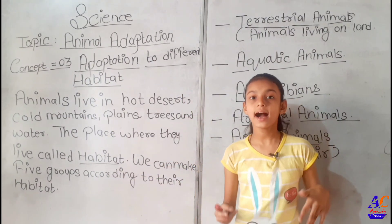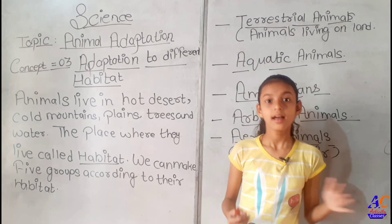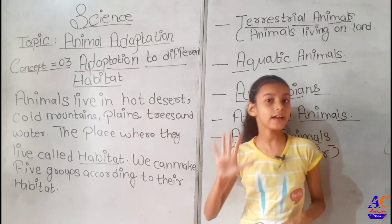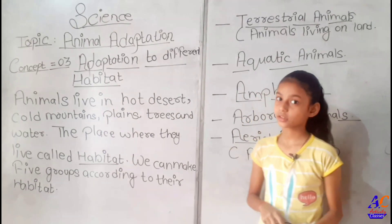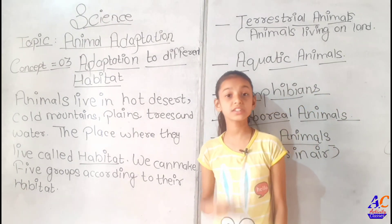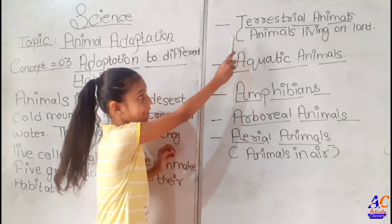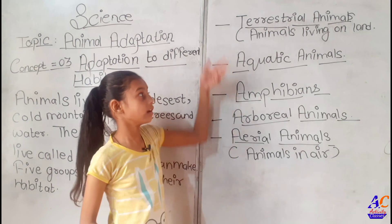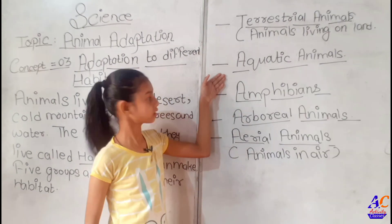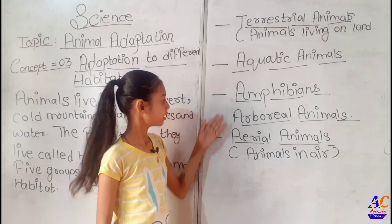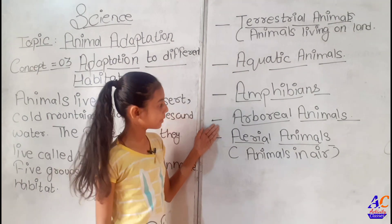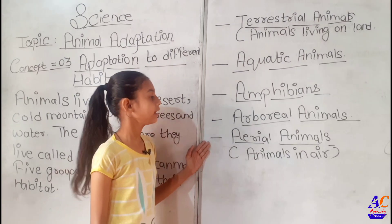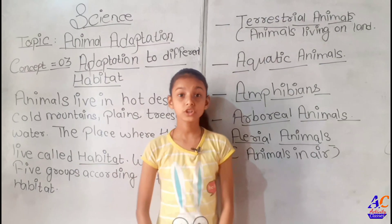We can make 5 groups of animals according to their habitat. The first group is Terrestrial animals — animals living on land. Second, Aquatic animals. Third, Amphibians. Fourth, Arboreal animals. Fifth, Aerial animals — animals that live in the air.